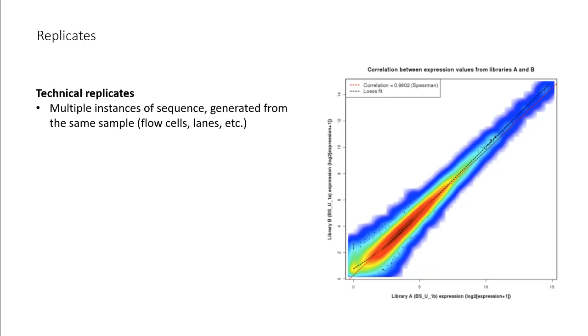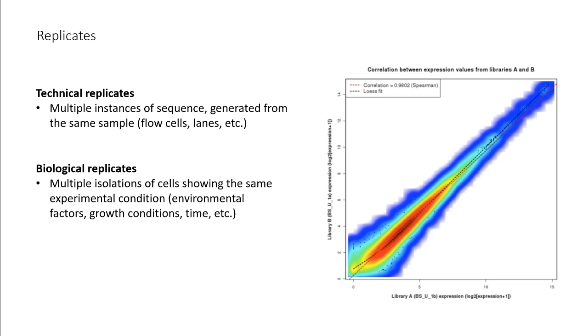There are two basic types of replicates. First is technical replicates, which are multiple instances of sequencing—for example, having a different flow cell or different library amplification—that are generated from the same sample. And then, of course, there are biological replicates, which are different isolations of cells showing the same experimental conditions.